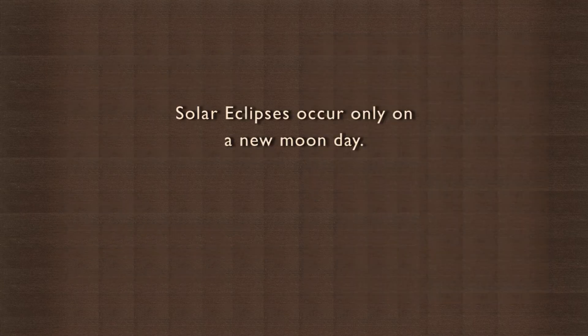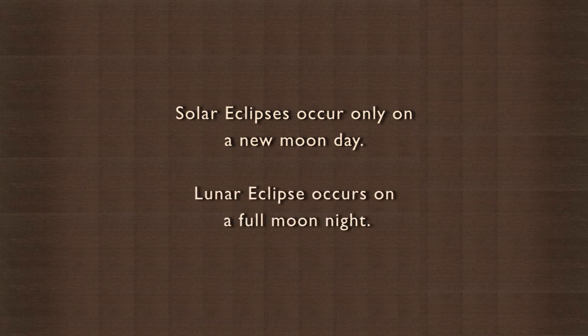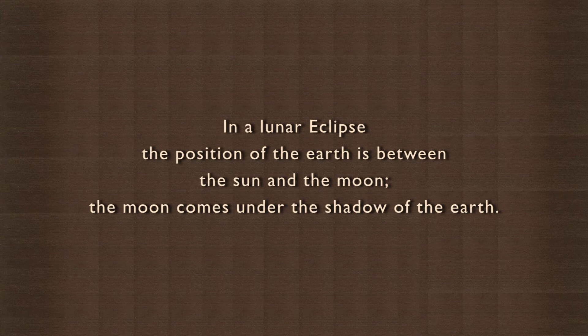Solar eclipses occur only on a new moon day. Similarly, a lunar eclipse occurs on a full moon night. In a lunar eclipse, the position of the earth is between the sun and the moon. The moon comes under the shadow of the earth.